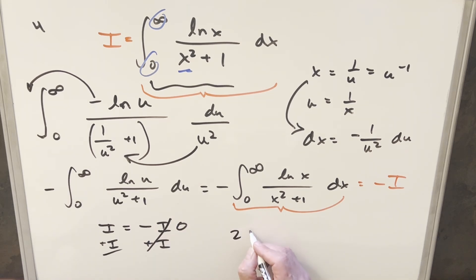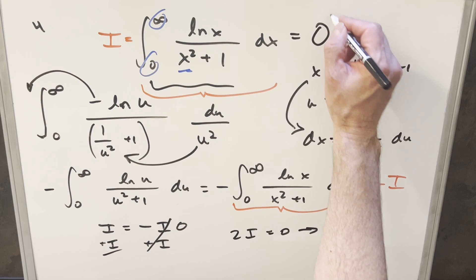On the left side, this is going to become 2I equal to zero, which means that I is just equal to zero. And so for our solution to this, we just get a zero.